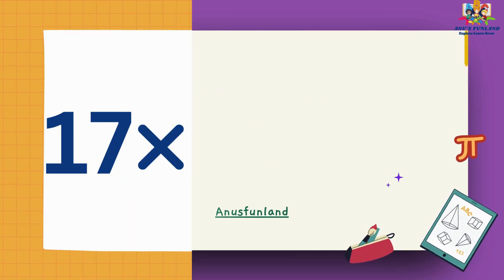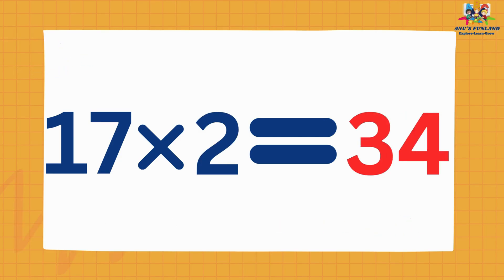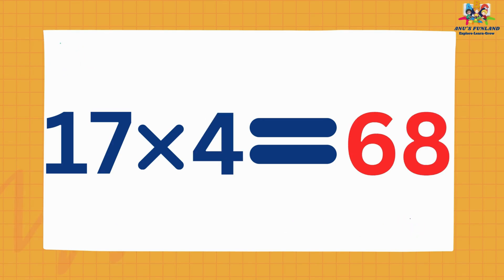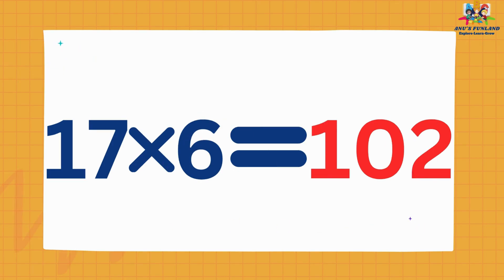17 ones are 17. 17 twos are 34. 17 threes are 51. 17 fours are 68. 17 fives are 85. 17 sixes are 102.